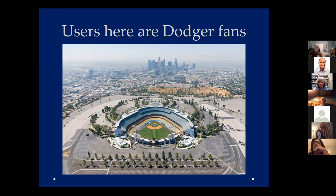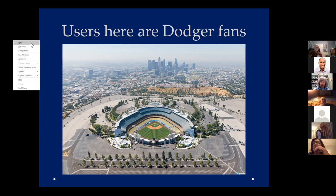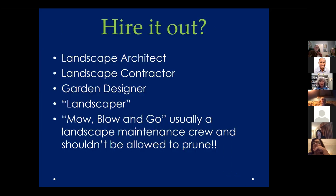Landscape architects design for users — like a baseball game venue, where people need to park, get in safely, and access the places they need. That requires drainage, legal, and safety specifications. Tonight, we're just talking about doing something in our own landscape for our own pleasure. For a personal business, objectives change — it may be about visibility from the street and safety for people getting in and out of the parking lot.